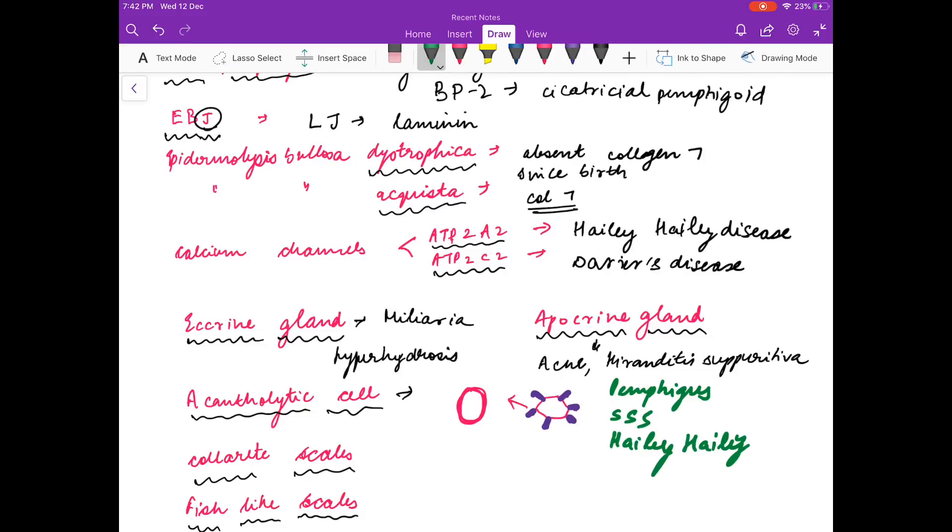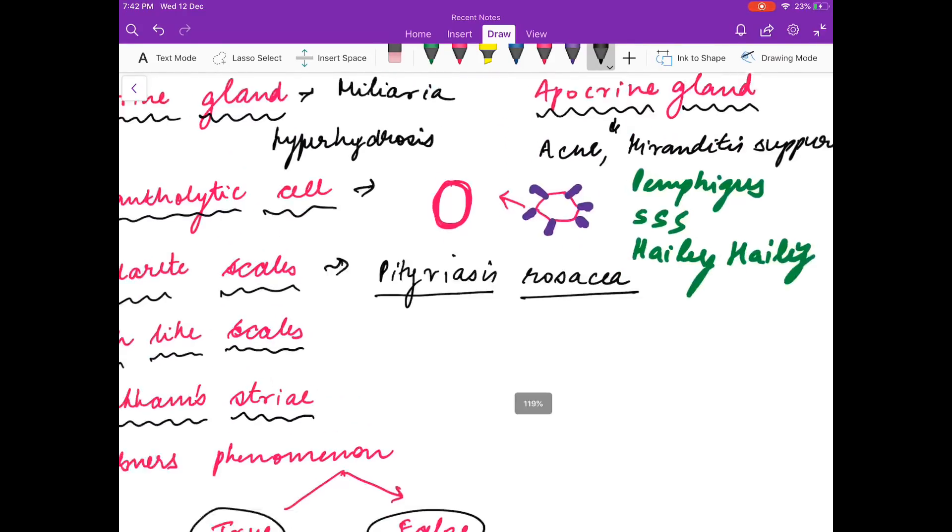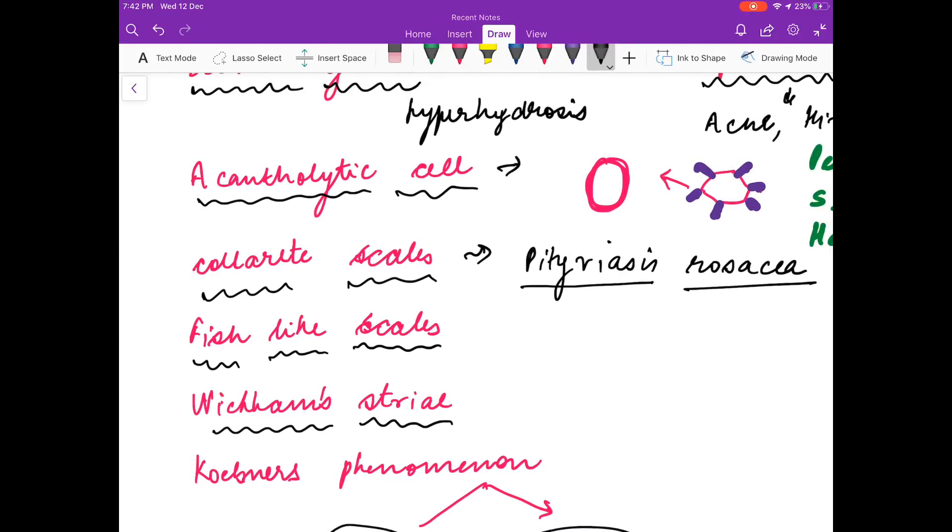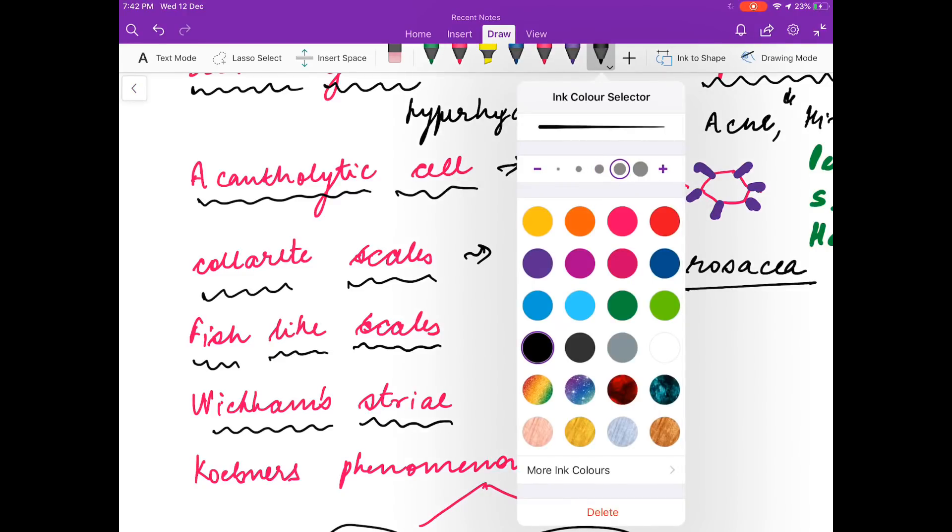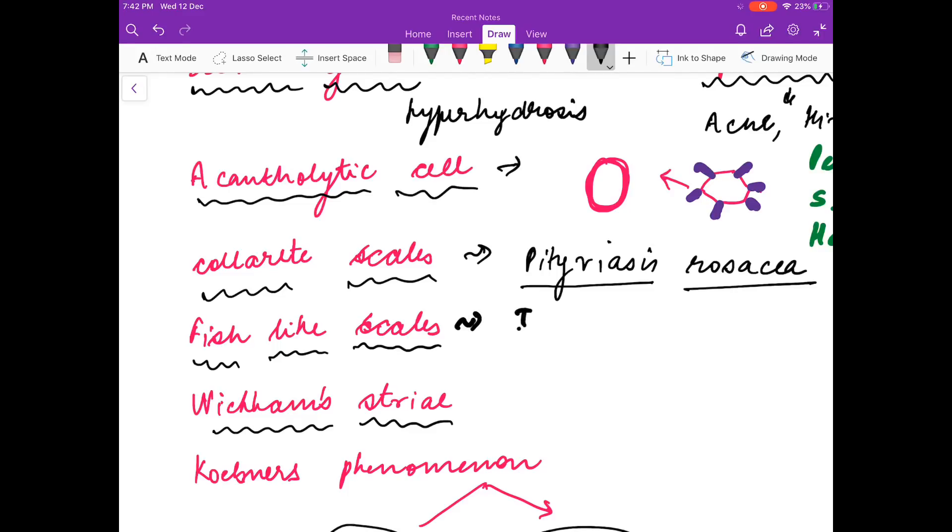Collaret scales are found in pityriasis rosea. Fish-like scales are found in ichthyosis.